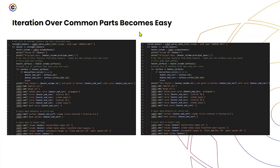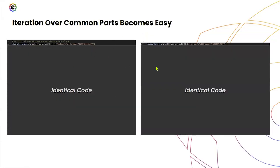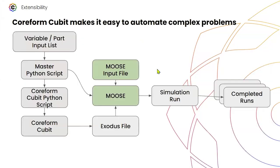Sometimes you get lucky — Coreform Cubit is smart enough to handle similar geometry. In the demonstration there were curved heaters and straight heaters, and I started by asking: if I can do a simple solution like a straight heater from a journal file, what if I just applied it directly to the curved heaters? Sometimes it works, and in this segment only the part number is different — the rest of the code is the same. This starts to become a library of functions I can reference when I encounter similar parts.